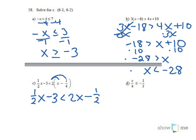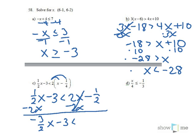Now I'm going to get my x's together. I'm going to subtract 2x from both sides. 1 half minus 2 is negative 1 and 1 half or negative 3 halves. 1 half x minus 3 is less than negative 1 half.